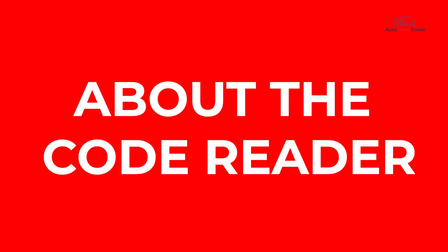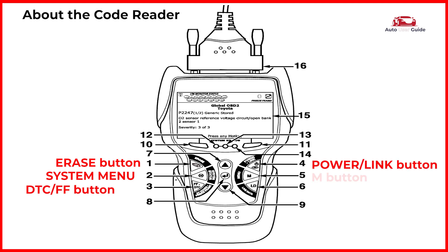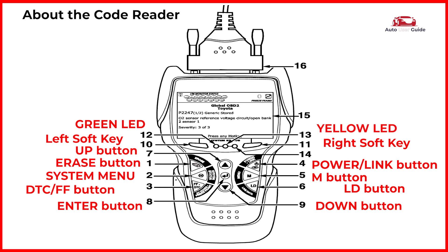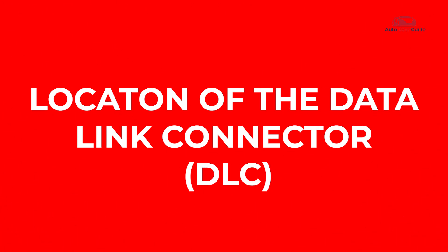About the code reader: the device features an erase button, system menu, DTC/FF button, power/link button, M button, LD button, up button, enter button, down button, left soft key, right soft key, green LED, yellow LED, red LED, display, and cable.